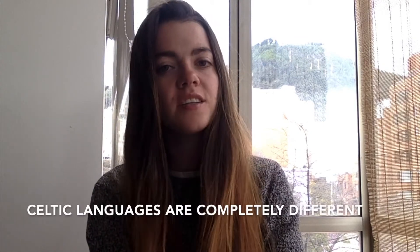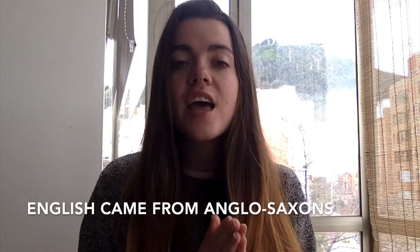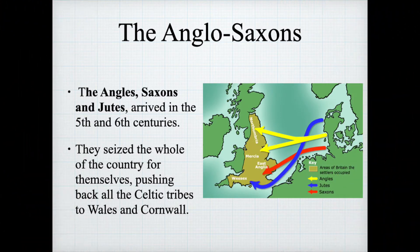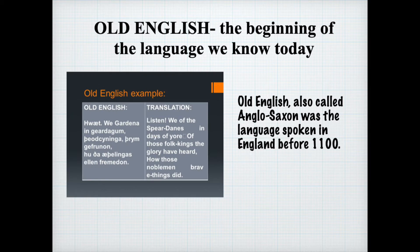Some of these Celtic languages still exist today and they are absolutely nothing like English — no similarities at all. So what are the origins of the English language as we know it today? The core of the English language came from the Anglo-Saxons, who are different Germanic groups who arrived in England in the 5th and 6th centuries. So after the Anglo-Saxons arrived in England, they seized the whole country and pushed the native Celtic tribes back to Wales and Cornwall. Their Germanic languages became widely spoken throughout England. This is where the origins of English come from — at this time it was called Old English, or Anglo-Saxon.